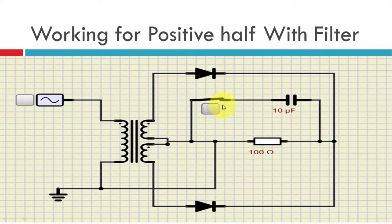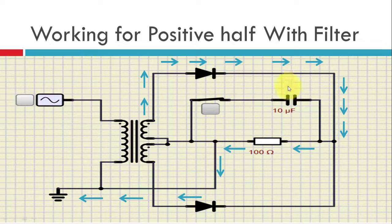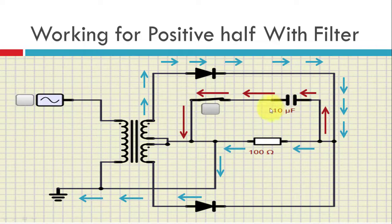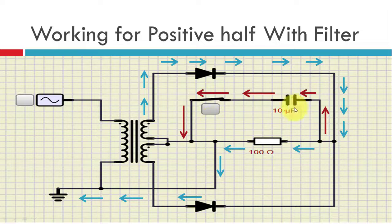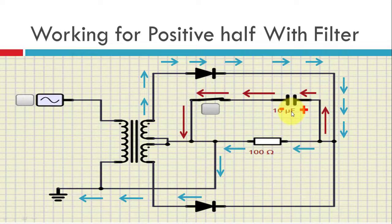Now when the filter is applied, as we close the switch, the capacitor gets connected. In the positive half, as we know, this is the flow of current. In this case, the current also flows to the above circuit. The blue path and the red path — the red path shows the charging of the capacitor because of this closed path. Because of this, we get plus and minus here, and the capacitor gets charged.